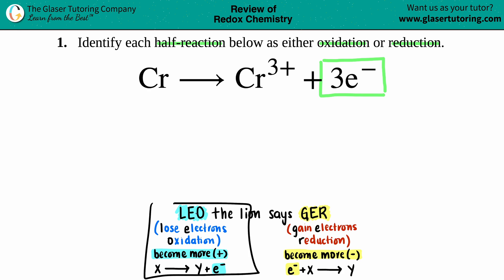On the flip side, if you did see the electrons on the left side of the equation, that's reduction. So since these electrons are on the product side, they're on the right, this is oxidation.